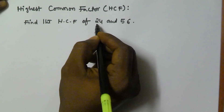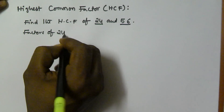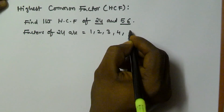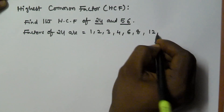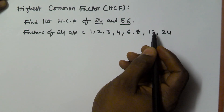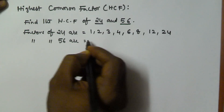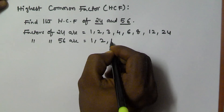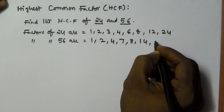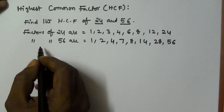To find the highest common factor, we have to find the factors of 24 and 56. The factors of 24 are 1, 2, 3, 4, 6, 8, 12, and 24 itself. The factors of 56 are 1, 2, 4, 7, 8, 14, 28, and 56 itself.